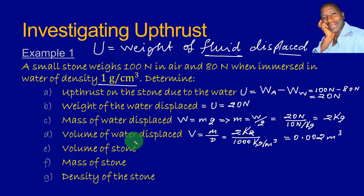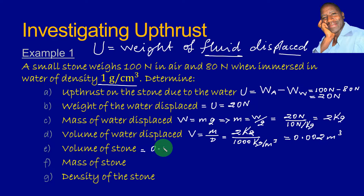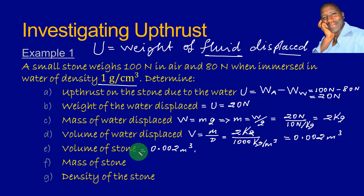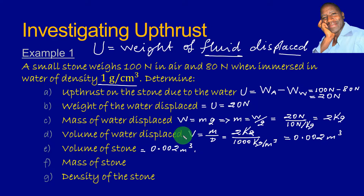From the volume of the water displaced, we can deduce that the volume of the stone is the same as the volume of the water displaced, which is 0.002 metres cubed. This was seen in our previous lesson where we used a measuring cylinder to determine the volume of an irregularly shaped stone — the moment you obtain the volume of the water displaced, you realise it equals the volume of the stone immersed in it, because the water gave space for the stone.